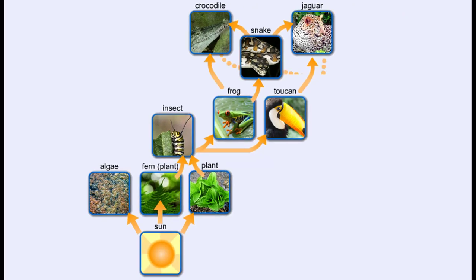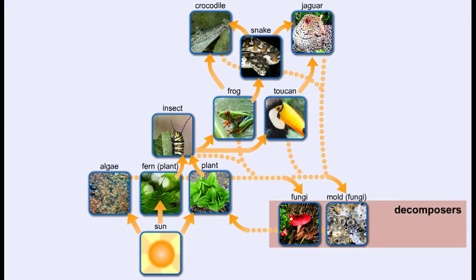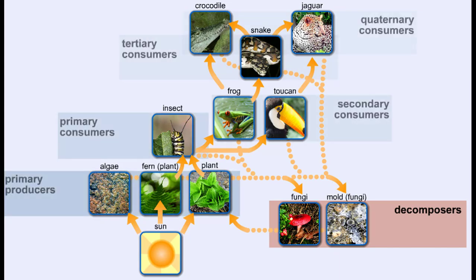Decomposers carry a special spot in the food chain. Because they obtain their nutrients by breaking down dead plant and animal matter, all other trophic levels in the food chain go to the decomposers. Combining all of the food chains within a community, including producers, consumers, and decomposers, gives us a food web.